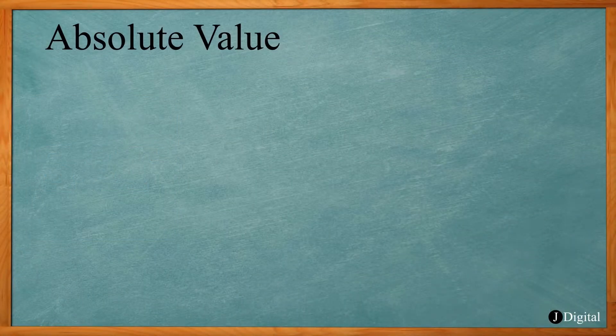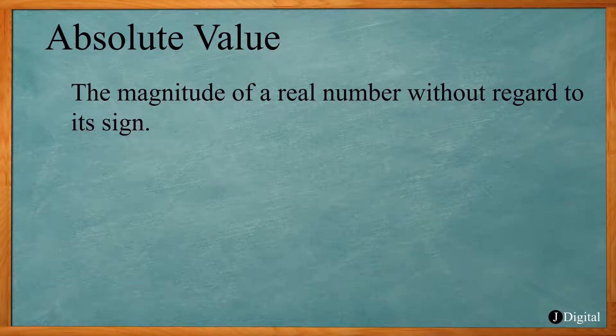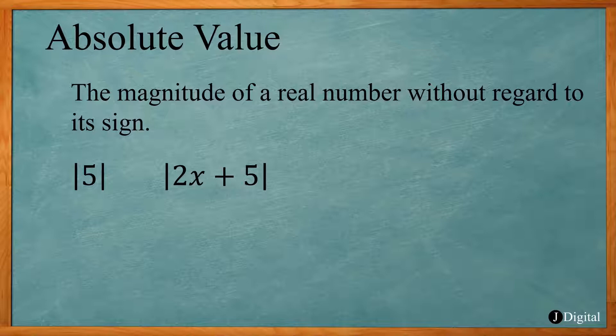So what is absolute value? Its definition is the magnitude of a real number without regard to its sign. You might see these vertical bars with a number or expression inside. That means absolute value, so you take the magnitude of that value. The absolute value of 5 is 5 and the absolute value of negative 5 is 5. Basically, just take the positive of what's inside the absolute value sign.